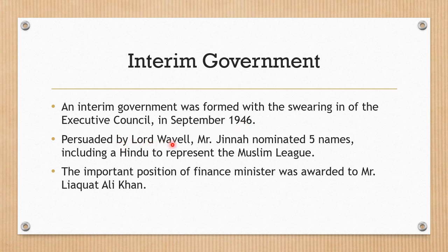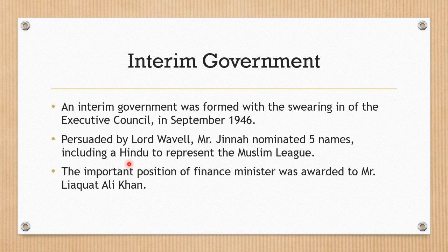The interim government was made. Persuaded by Lord Wavell, Mr. Jinnah nominated five names, including a Hindu, to represent the Muslim League. After the approval of Lord Wavell, Mr. Jinnah nominated five members who would represent the Muslim League in the government. He also included a Hindu name to show that the Muslim League was not only a Muslim party but represented others as well.